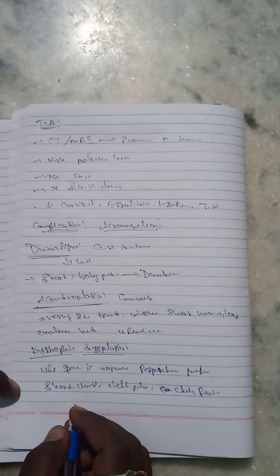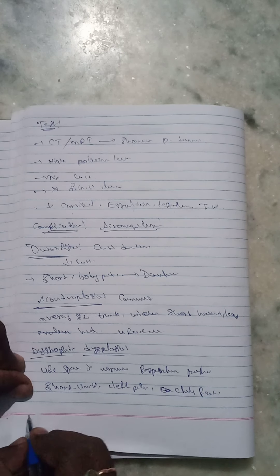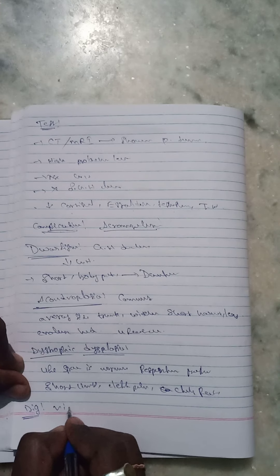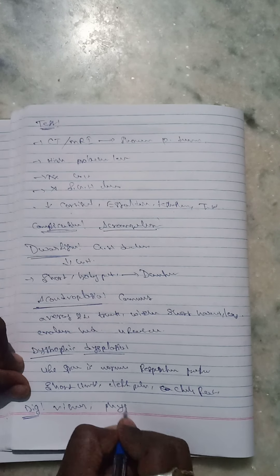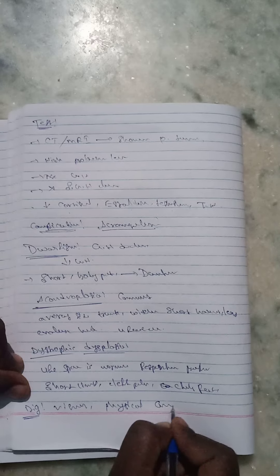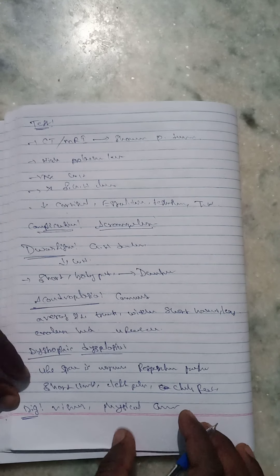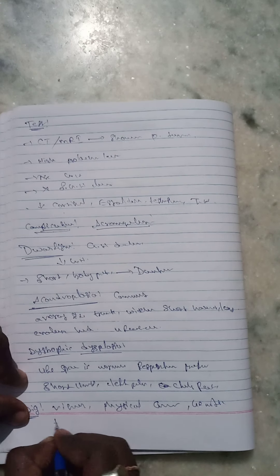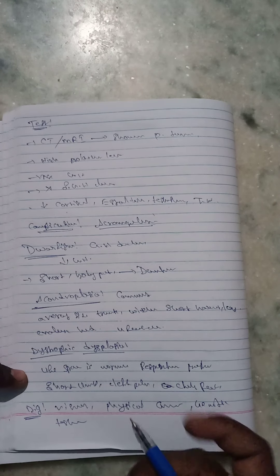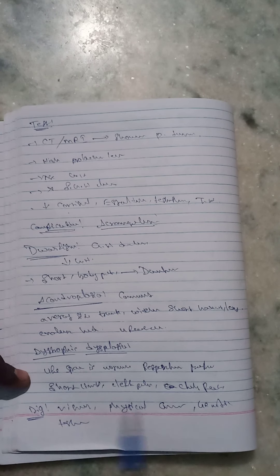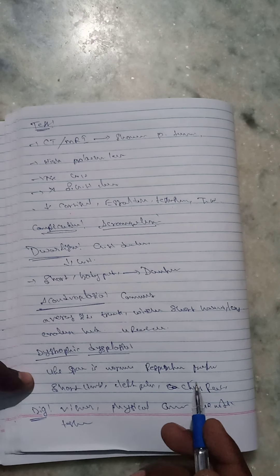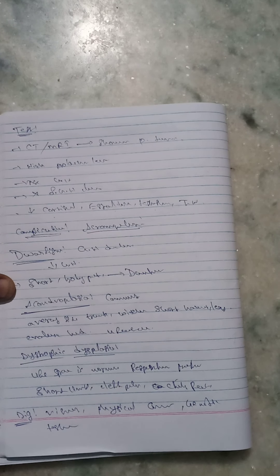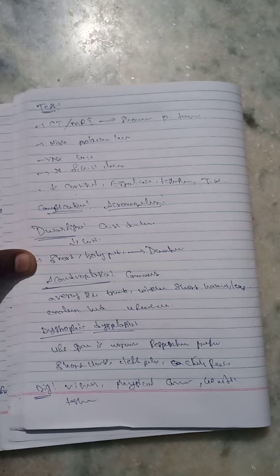How is dwarfism diagnosed? Dwarfism is diagnosed visually or by physical examination. Genetic testing can also be used to determine dwarfism. This concludes our discussion on acromegaly, gigantism, and dwarfism. If you have any doubts on this topic, we will discuss tomorrow.